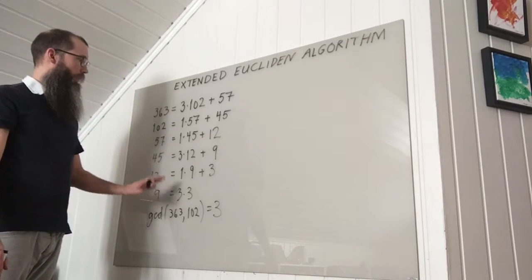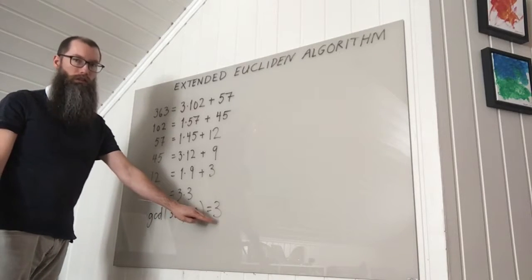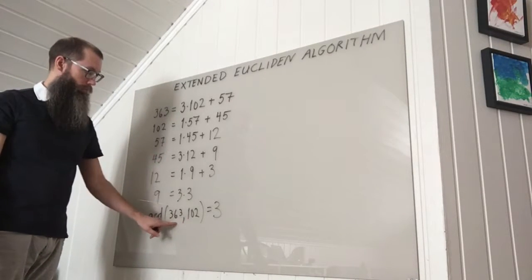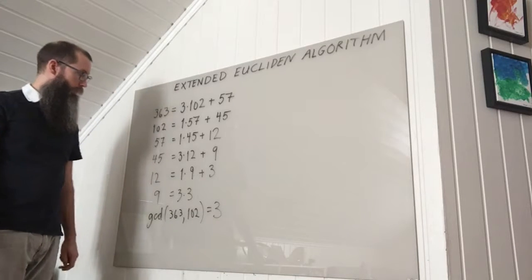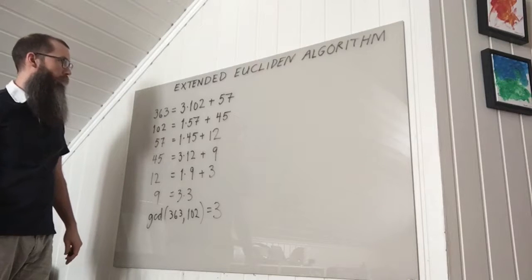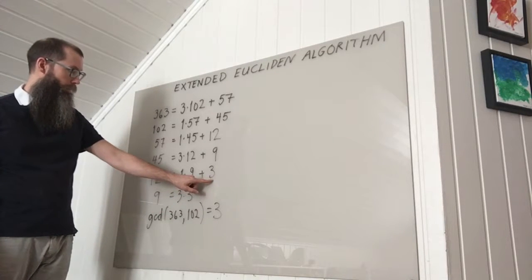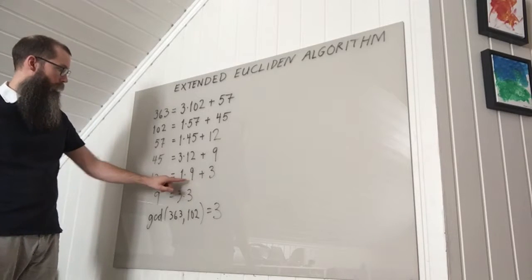I'm going to extend the algorithm so that I can write this greatest common divisor as a linear combination of these two numbers. And the process is a reversion of the algorithm where I try to express 3 first as a linear combination of 9 and 12.